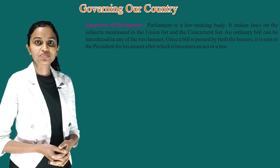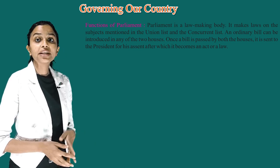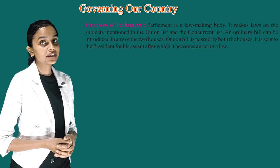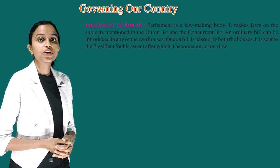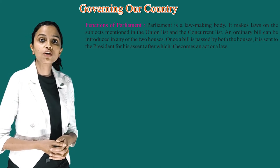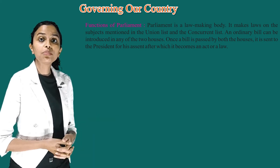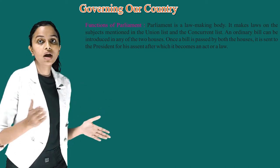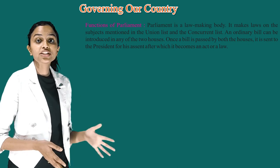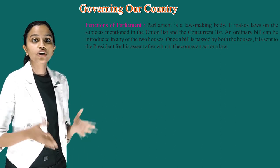Functions of Parliament: Parliament is a law-making body. It makes laws on the subjects mentioned in the Union List and Concurrent List. An ordinary bill can be introduced in any of these two houses. Once a bill is passed by both the houses, it is sent to the President for his assent, after which it becomes an act or a law.